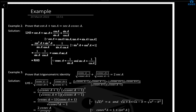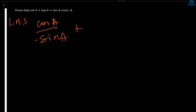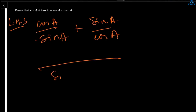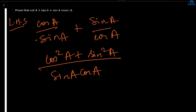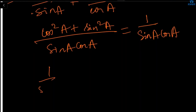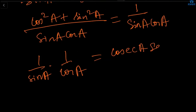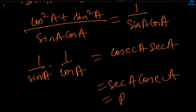Prove that cotA + tanA = secA · cosecA. Taking LHS: cotA equals cosA/sinA and tanA equals sinA/cosA. So LHS equals cosA/sinA + sinA/cosA. Taking LCM (sinA · cosA), the numerator becomes cos²A + sin²A. From the identity, sin²A + cos²A = 1, so this equals 1/(sinA · cosA). Writing separately: 1/sinA is cosecA and 1/cosA is secA. So LHS equals secA · cosecA, which equals RHS.